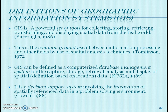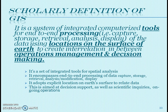So what exactly is a Geographic Information System? Different authors have given varying definitions of GIS — Borogos in 1986, Tolneson in 1972, NCGIA in 1987, and Cowan in 1988. The comprehensive definition is: GIS is a system of integrated computerized tools for end-to-end processing — that is, capturing, storing, retrieval, analysis, and displaying of data — using locations on the earth's surface to create interrelations between operations management and decision making.